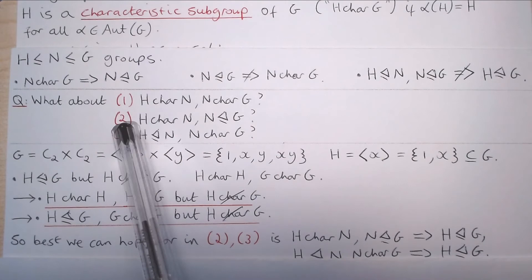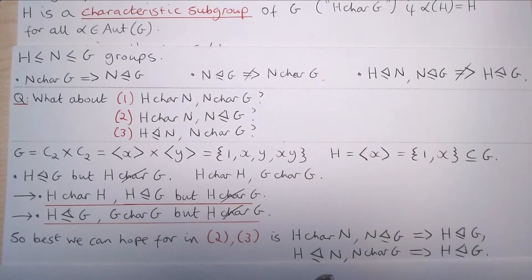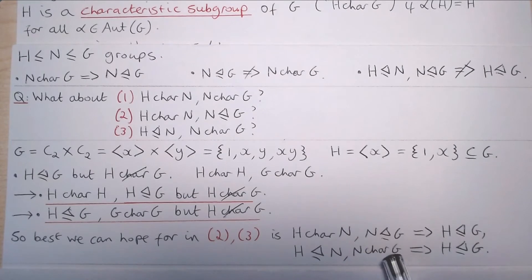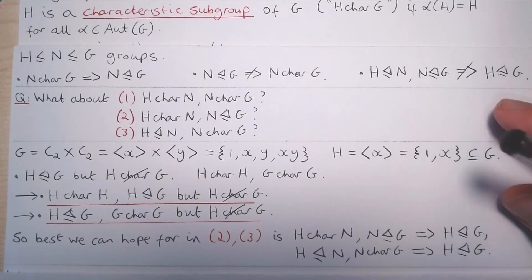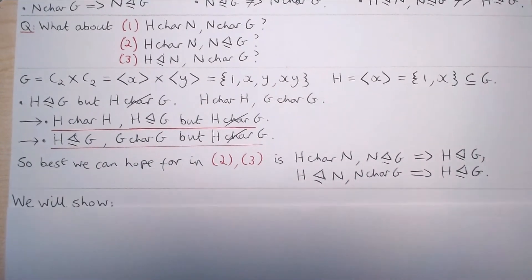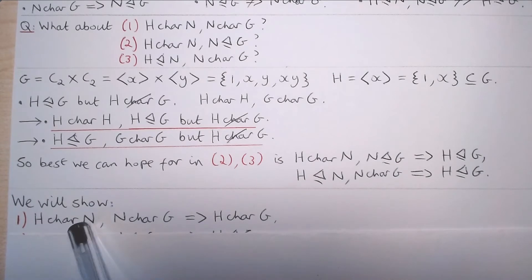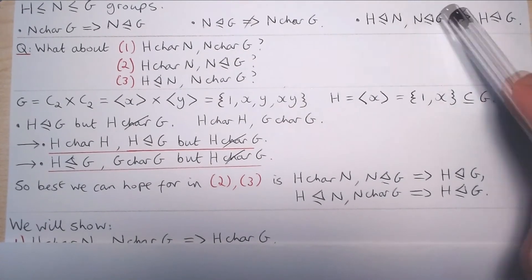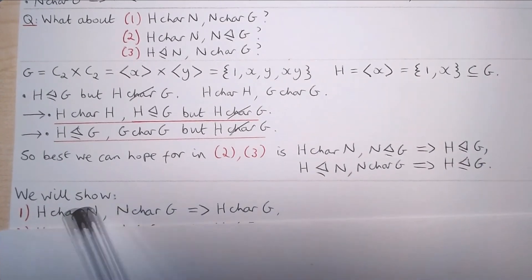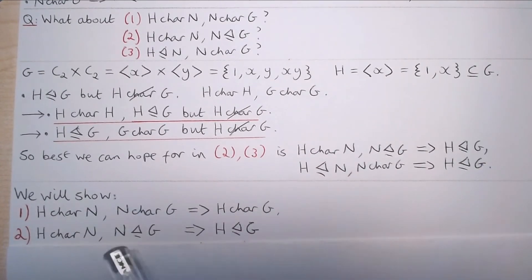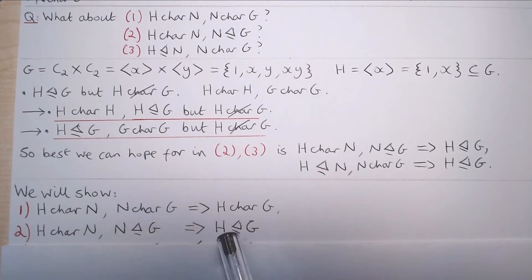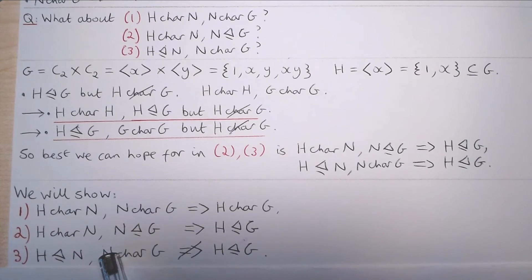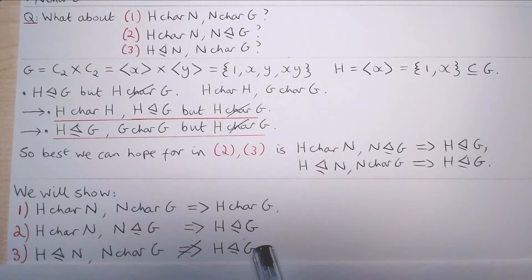So in other words, the best we can hope for in cases 2 and 3 is that H characteristic in N and N normal in G implies H normal in G, and H normal in N and N characteristic in G implies H normal in G. What we will show in this video is: first, if H is characteristic in N and N is characteristic in G then H is characteristic in G — unlike for normal subgroups, this property is transitive. Second, if H is characteristic in N and N is normal in G, then H is normal in G. And finally, we will show that if H is normal in N and N is characteristic in G, this does not even imply that H is normal in G.